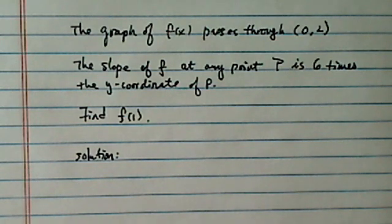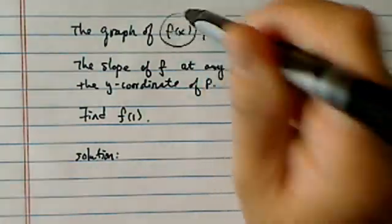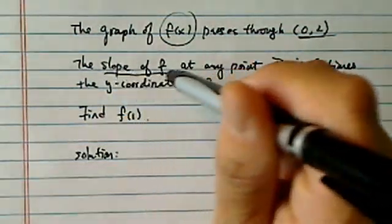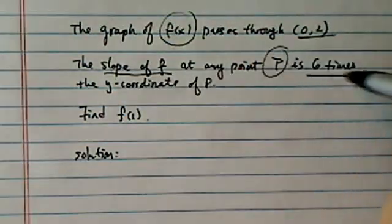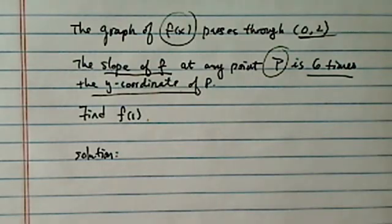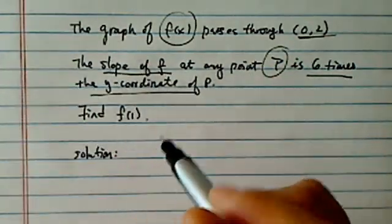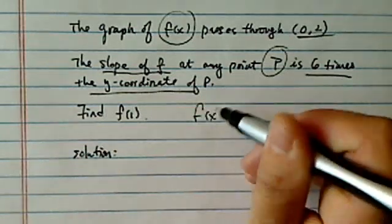We have an interesting problem here to solve. It says the graph of a function passes through a point, and then we're given that slope of this f at any point is 6 times the y-coordinate of the given point. We're supposed to find f of 1. Of course, they're really looking for f of x.